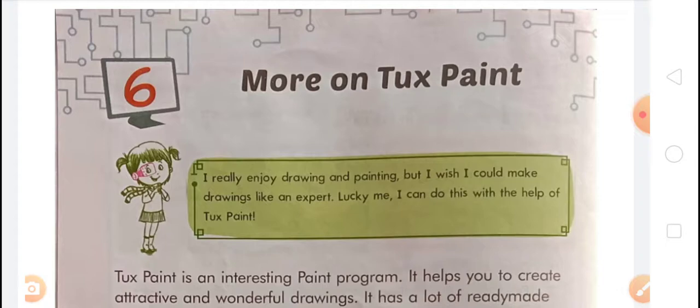In the fourth chapter we learned handling a mouse, including the computer mouse and mouse actions — these are five types — and the touchpad. In the fifth chapter we learned more on MS Paint, and the subtopics were the paint window, pencil tool, eraser tool, fill with color tool, color picker tool, text tool, brushes tool, drawing shapes, saving a drawing, opening a drawing, and closing Paint. Today's chapter is more on Tux Paint.